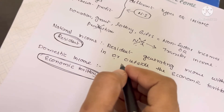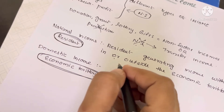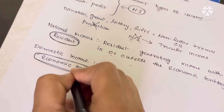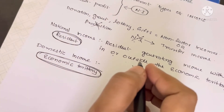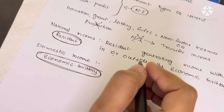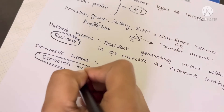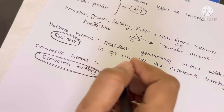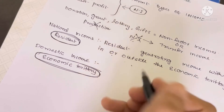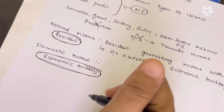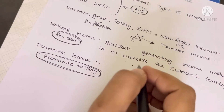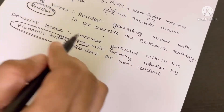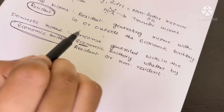Domestic income is income generated within the economic territory. It includes income by both Indian residents and non-Indians. Both residents and non-residents who generate income within the economic territory are included in domestic income.